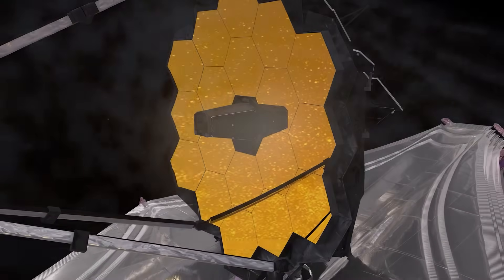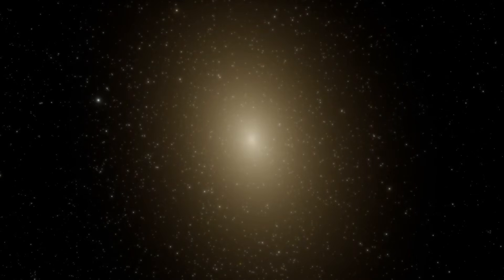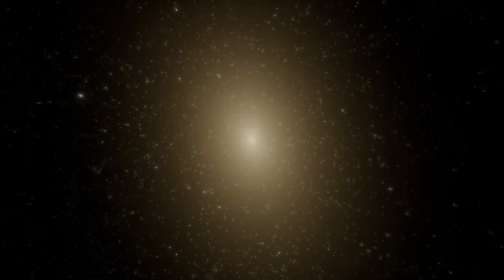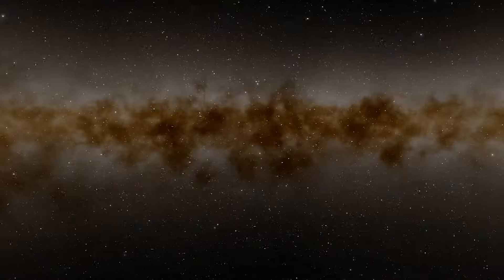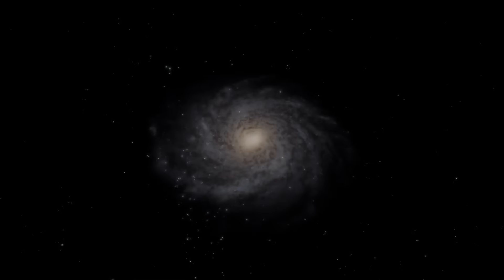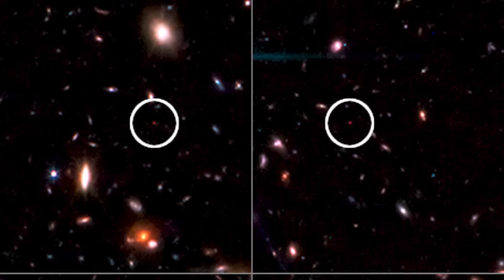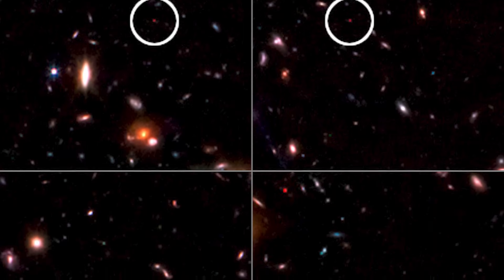Using redshift, the scientists calculated that the light from these objects took more than 13 billion years to reach our eyes on Earth. Consequently, we are dealing with structures that have already existed between 500 and 700 million years after the alleged Big Bang. By analyzing the characteristics of these structures, it was concluded that the Webb telescope had captured six extremely early galaxies in the image.